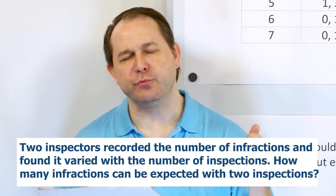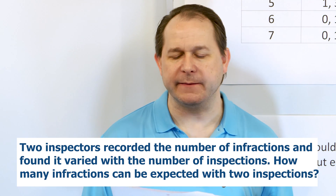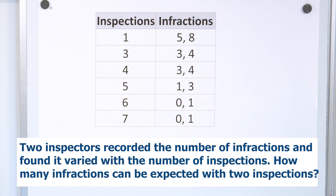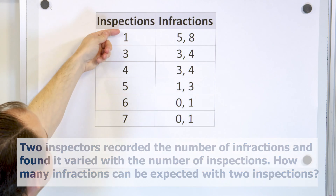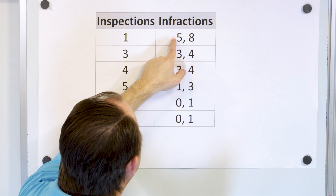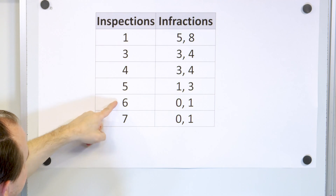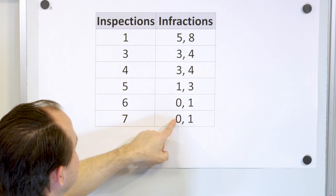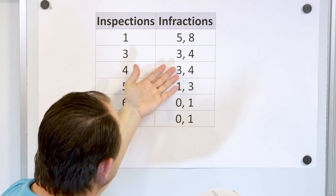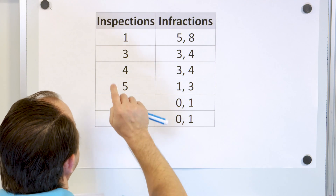Problem number two: two building inspectors recorded data on the number of infractions found each month varied with the number of inspections. After one inspection, one crew has five infractions and another has eight. As we increase the number of inspections up to seven, there are fewer and fewer infractions — if you're checking up on somebody more, it makes sense they do a better job. Let's draw the data.